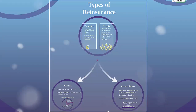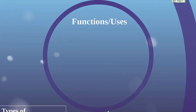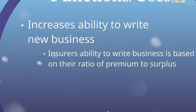So reinsurance can be facultative pro rata, facultative excess of loss, treaty pro rata, or treaty excess of loss. Now let's look at why insurance companies use reinsurance. First, reinsurance increases the ability of insurers to write new business. Insurers' ability to write business is based on their ratio of premium to surplus — surplus being assets minus liabilities. Insurance companies must have a certain amount of surplus to support their premium writings in case losses exceed what's expected. Surplus is a cushion to protect the insurance company and its insureds against losses being higher than expected. Reinsurance can reduce premium and increase surplus by transferring some of the assumed risk to the reinsurer.